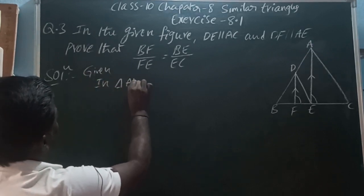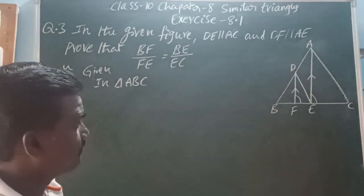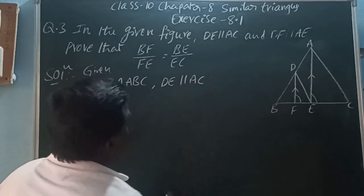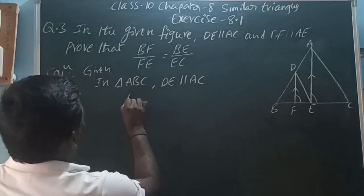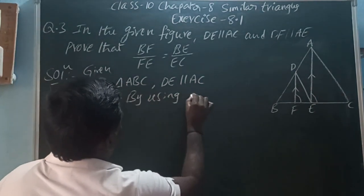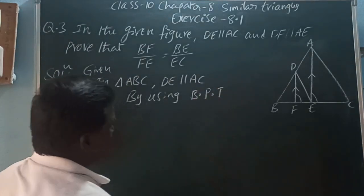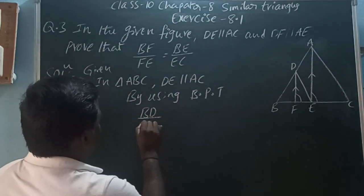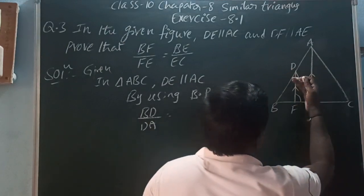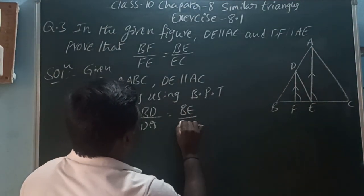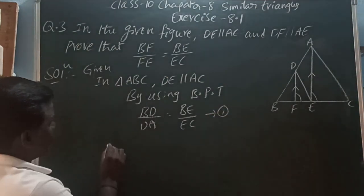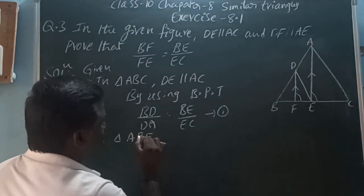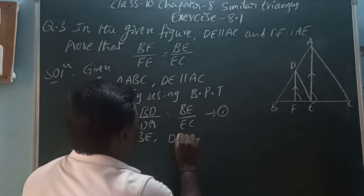In triangle ABC, DE is parallel to AC (given). So by using BPT — BPT means Basic Proportionality Theorem — BD/DA is equal to BE/EC. This is equation one.